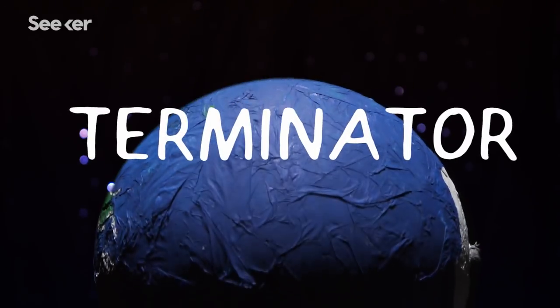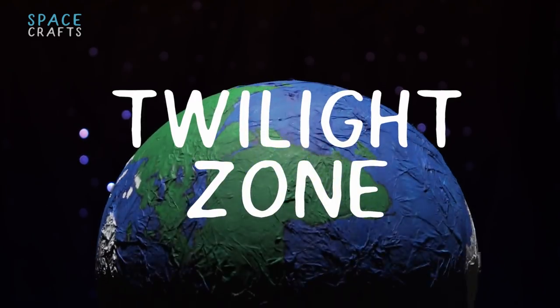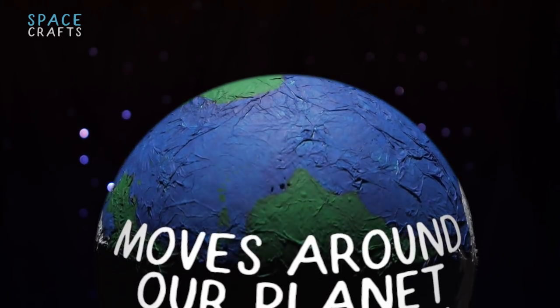The Terminator, also called Solar Terminator or the Twilight Zone, moves around our planet once a day.